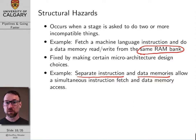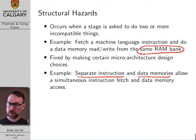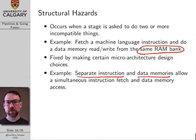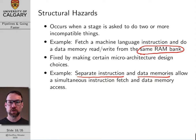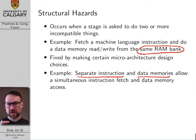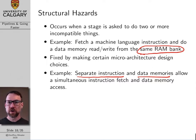Either we literally have different instruction and data memories — for example, in little 8-bit microcontrollers like the PIC microcontroller or the ones used in Arduinos — or we have separate intermediate instruction and data memories, which is what's used in ARM cores and Intel chips.